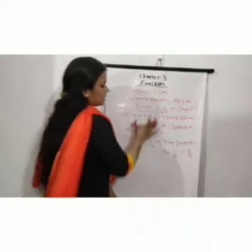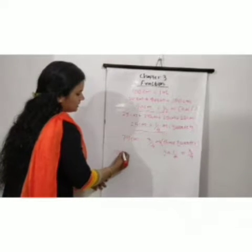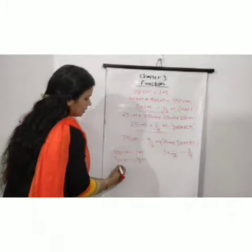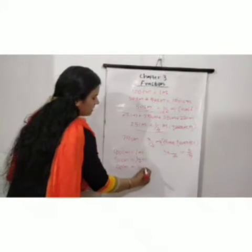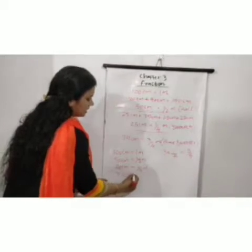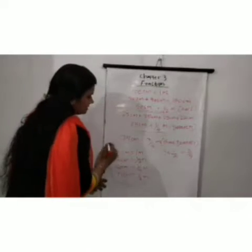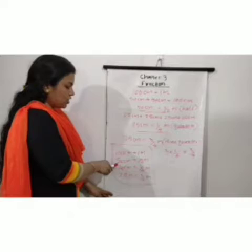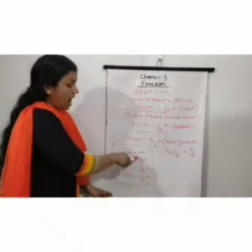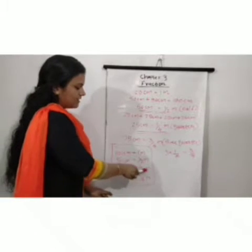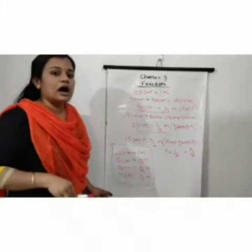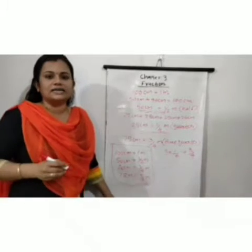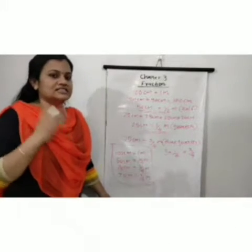Let us conclude: 100 centimeters equals 1 meter. 50 centimeters equals half meter. 25 centimeters equals 1/4 meter. Then 75 centimeters equals 3/4 meter. This is the conclusion of these units. You should study: 100 centimeters equals 1 meter, 50 centimeters equals half meter, 25 centimeters equals 1/4 meter, and 75 centimeters equals 3/4, which is 3 quarters, meaning 3/4 part of 100 centimeters.